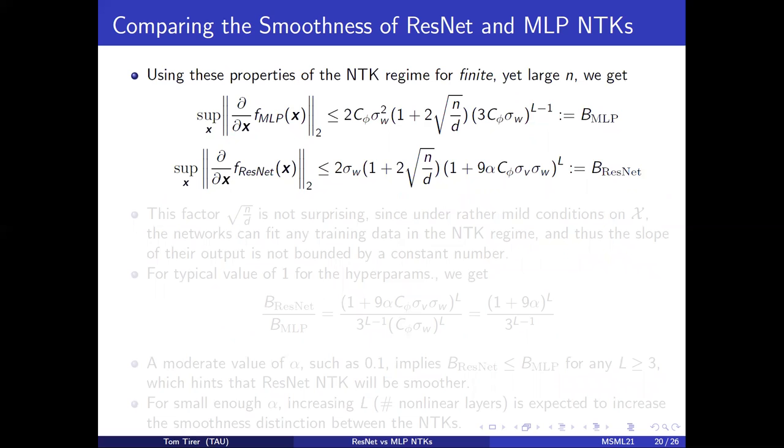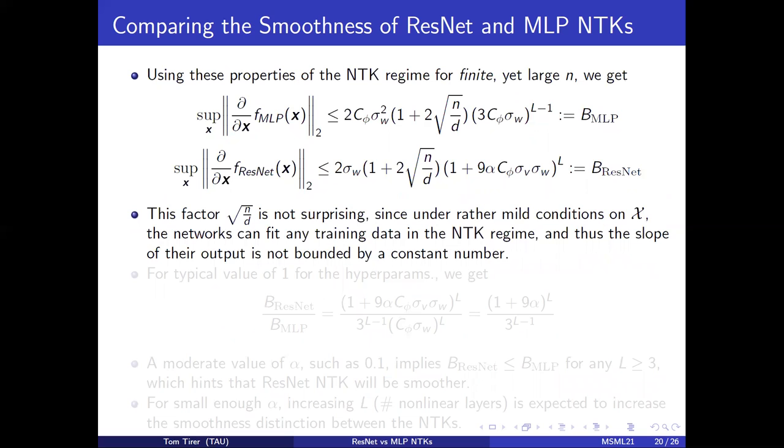Using these properties for all the weight matrices, we get the following bounds for finite yet large n. We still have a dependency on n that is not upper bounded, but this is not surprising, because we show that the network can fit any training data in the NTK regime under mild assumption,